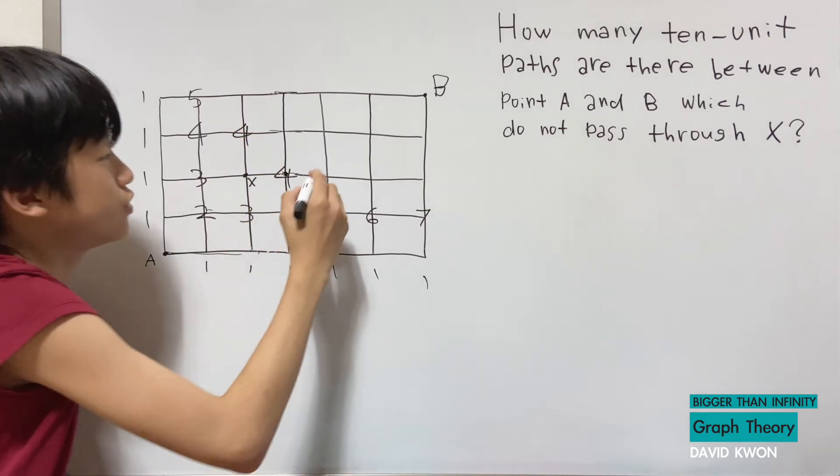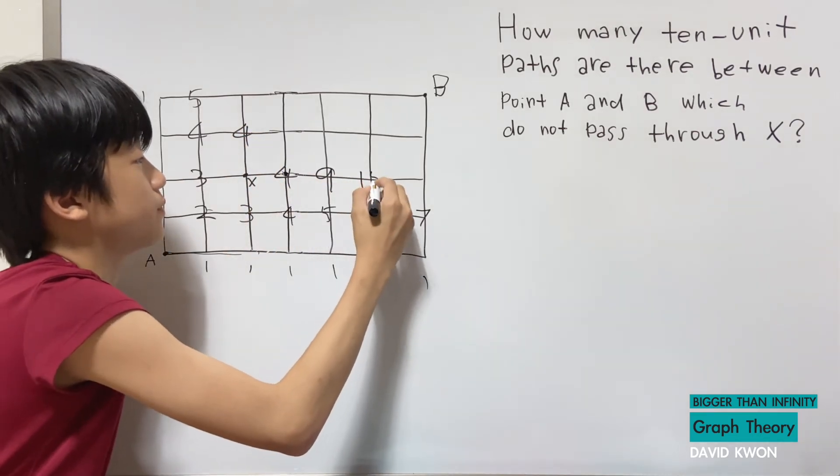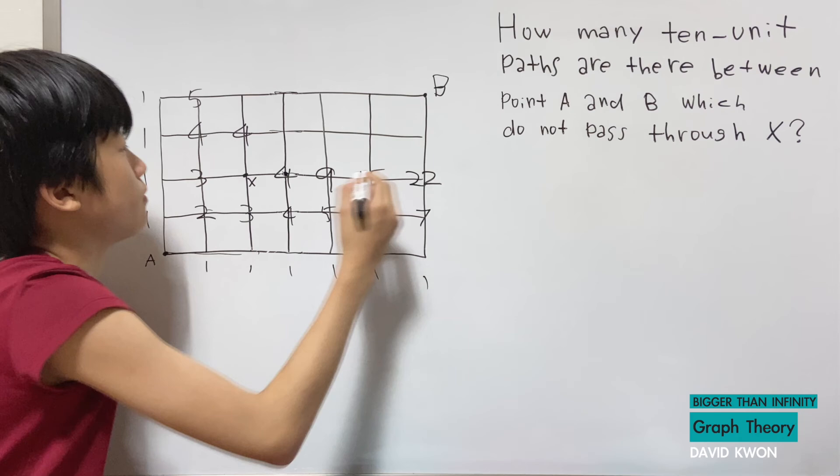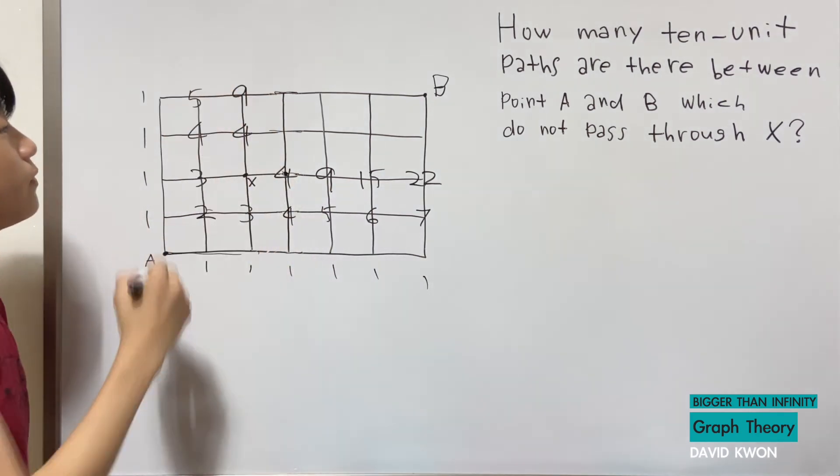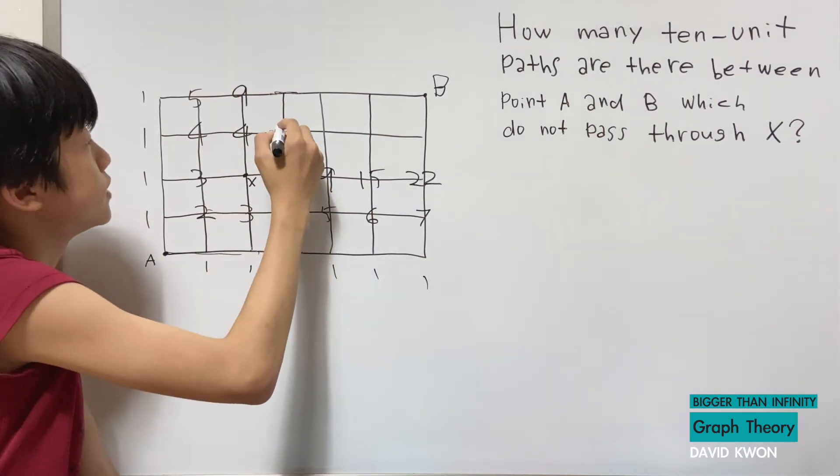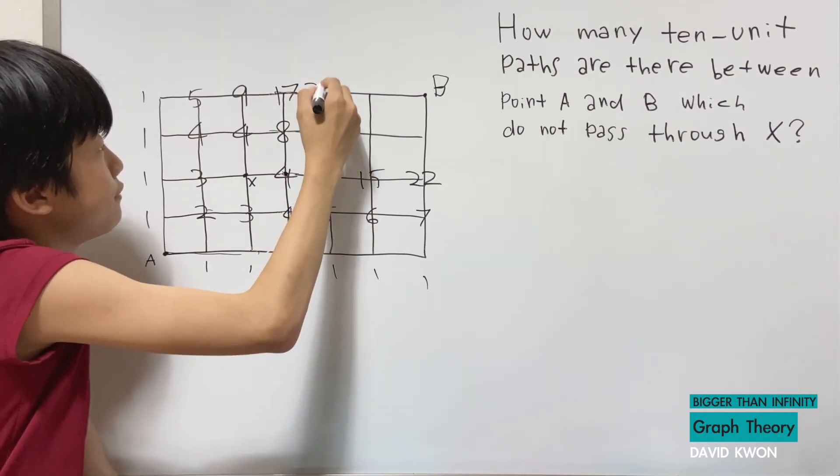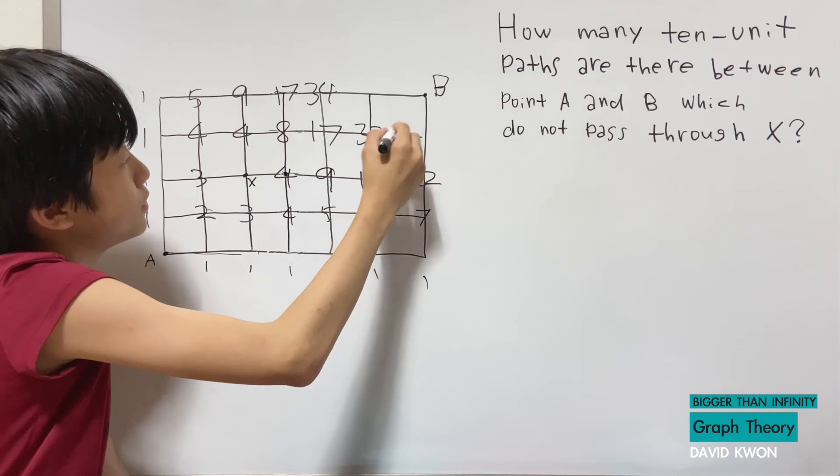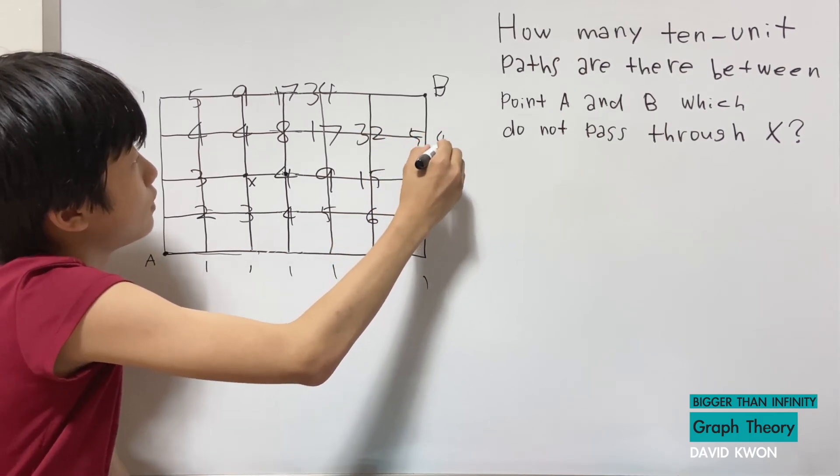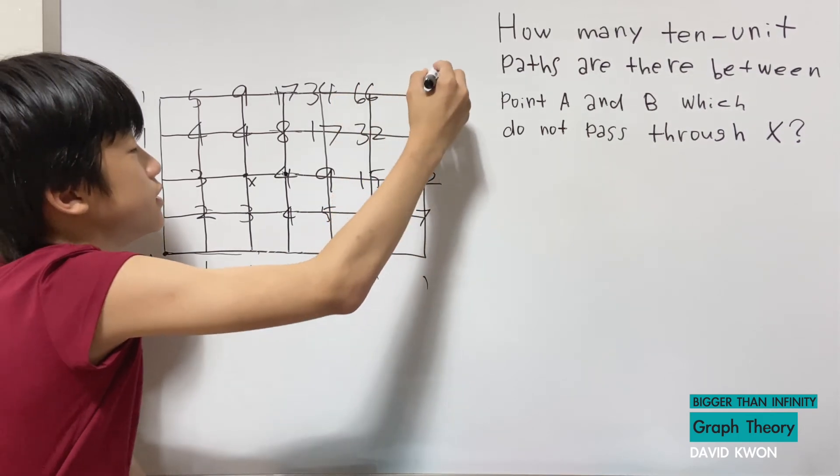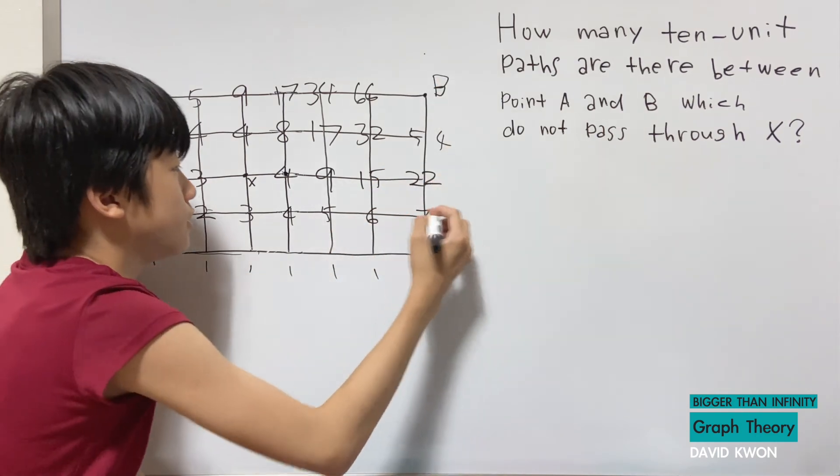So over here would work the same and have four. And now we can just do some additions. Four plus four is eight. Right here is 17, this is 17, this is 34, this is 32, 54, 66, and this is 120.